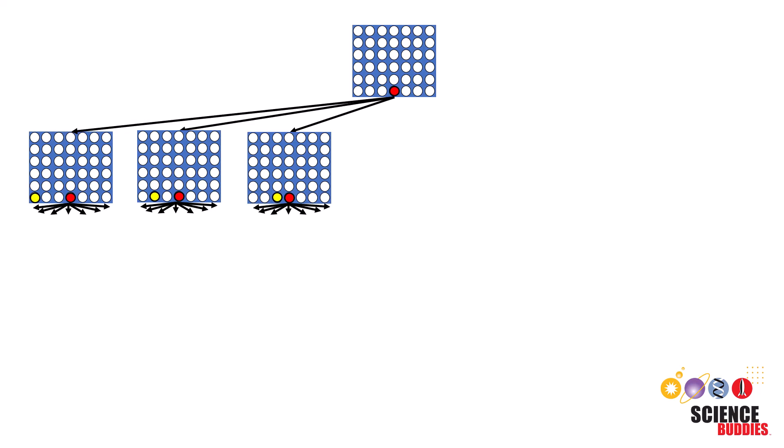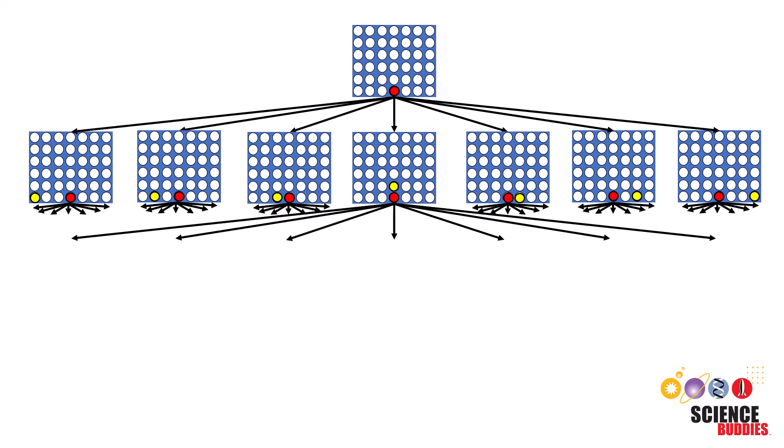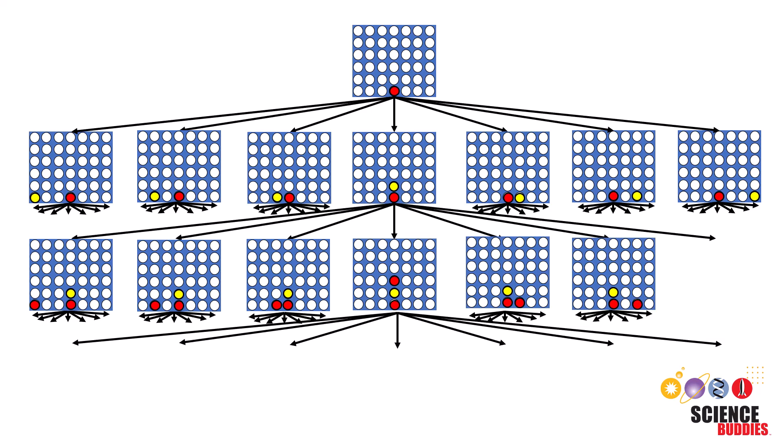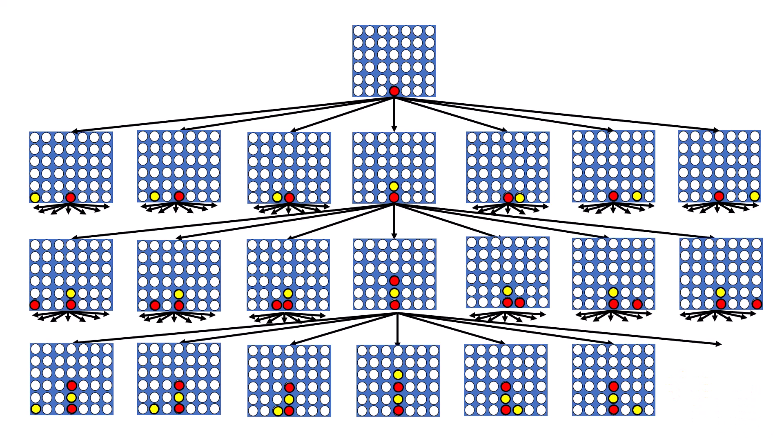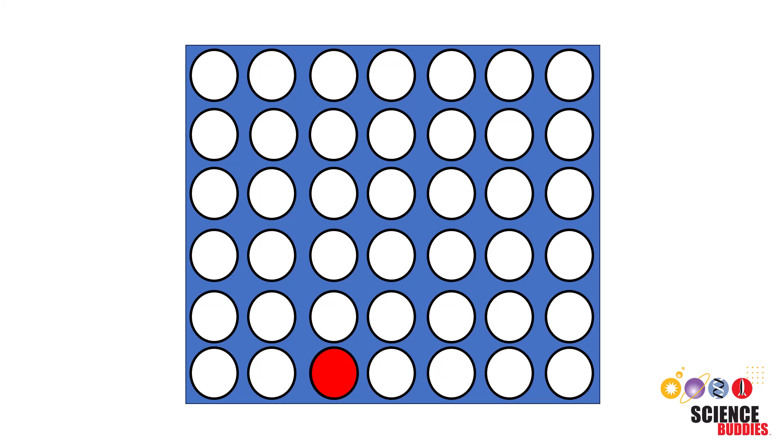Hey everybody, it's Tracy from Science Buddies. Today, we're going to explore how the Minimax algorithm with alpha beta pruning works with the classic game Connect 4. Before we start on the algorithm, let's revisit the basics of Connect 4.